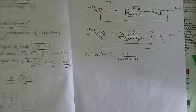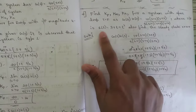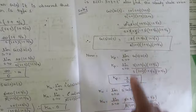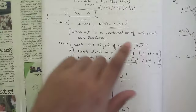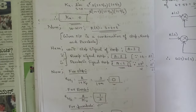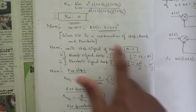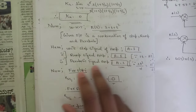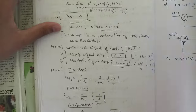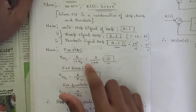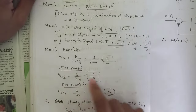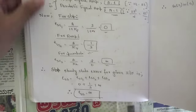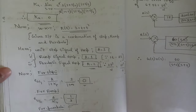Many problems of this kind have been discussed. Sometimes the input is a single step, ramp, or parabolic signal, but it can also be a combination of all three. In that case, write each component separately with its amplitude, find the steady state error for each using the respective formula, and sum them all to get the total steady state error.